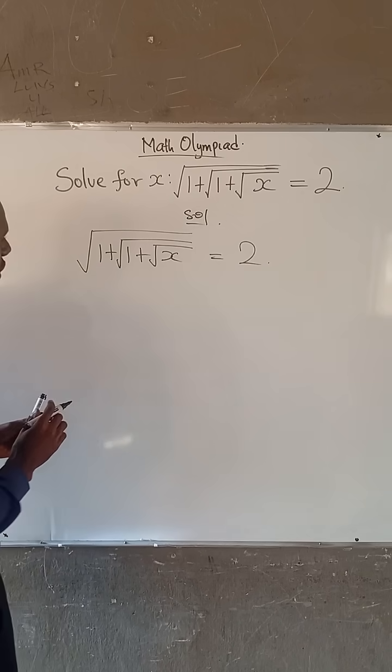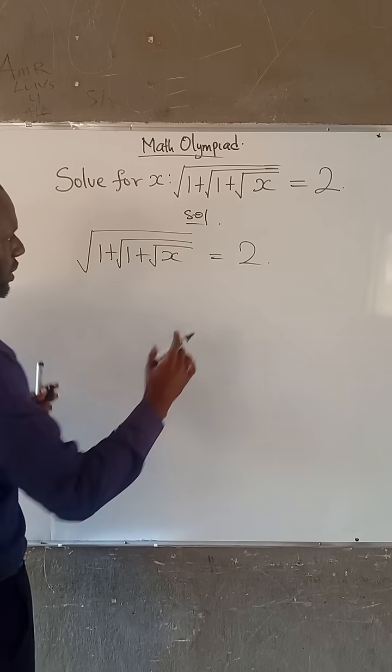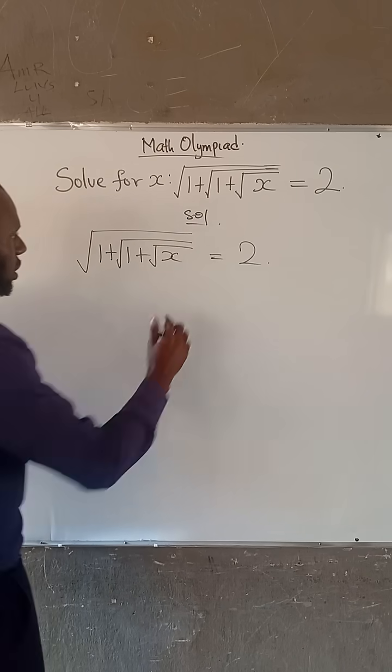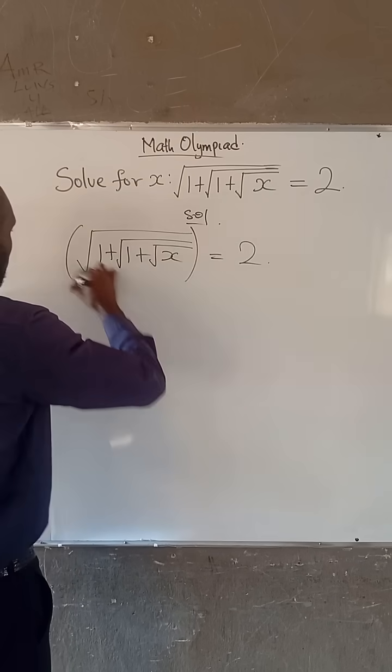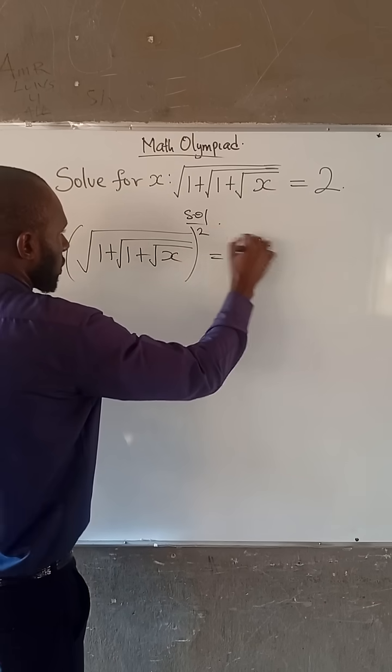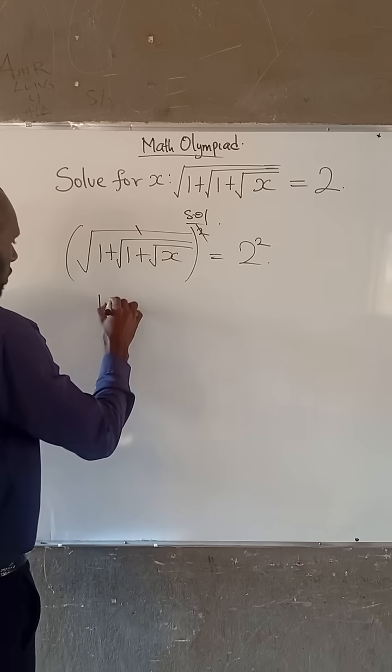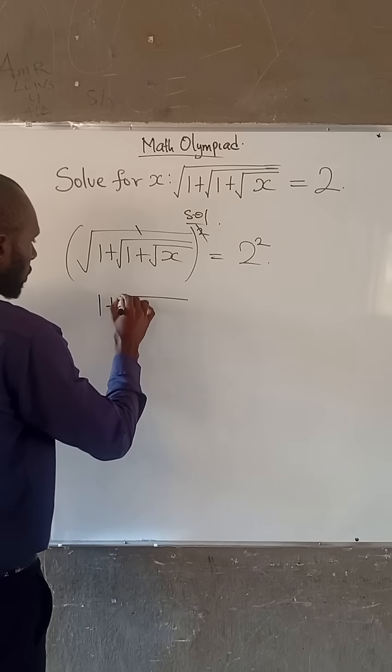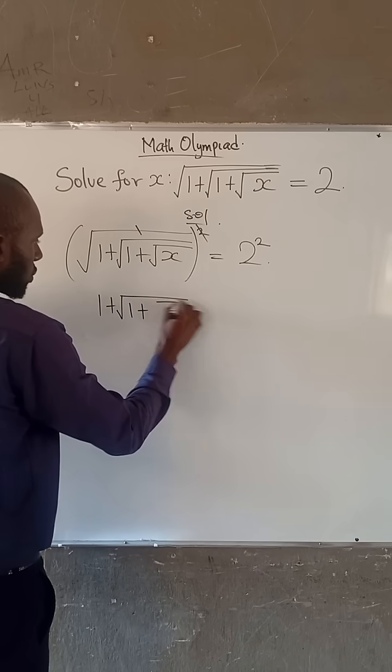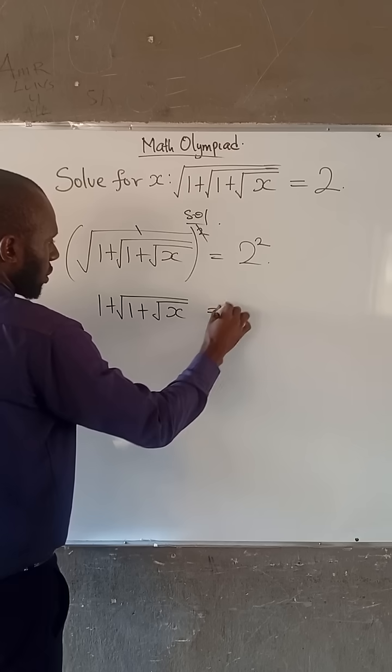At this point, the first thing we do is take the square of both sides. If we square both sides, this square here will cancel this root. So we have 1 plus root 1 plus root x equals 4.